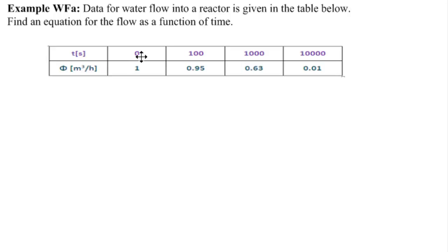Probably the easiest thing to do would be to change the time into hours. So we'll write above this T in hours and change each of these to hours. So we need to divide each by 3,600. Zero divided by 3,600 is, of course, just zero.